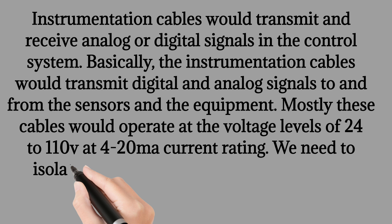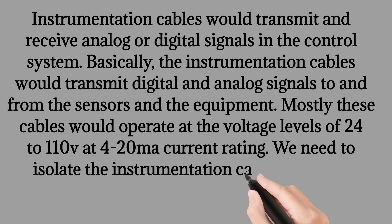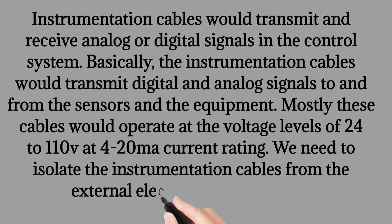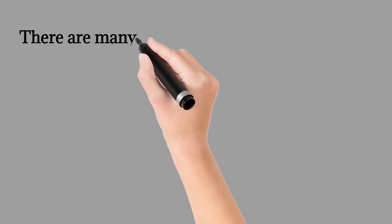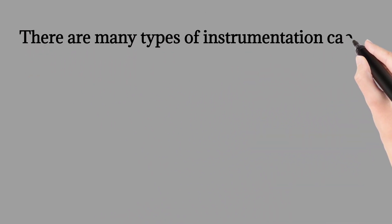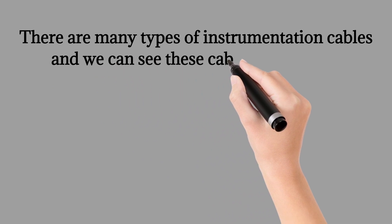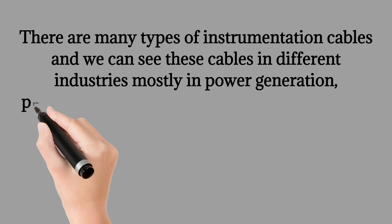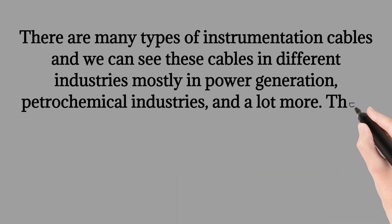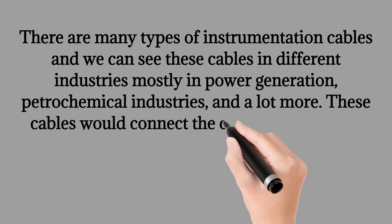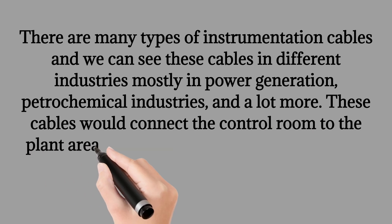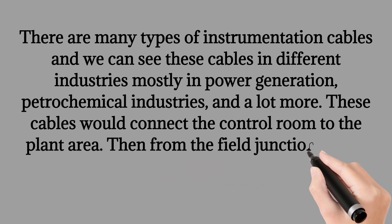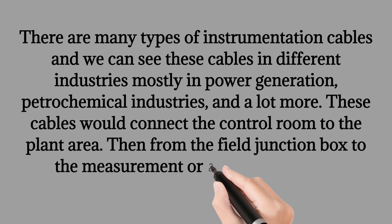We need to isolate the instrumentation cables from the external electrical interferences. There are many types of instrumentation cables and we can see these cables in different industries, mostly in power generation, petrochemical industries, and a lot more. These cables would connect the control room to the plant area, then from the field junction box to the measurement or actuating devices.